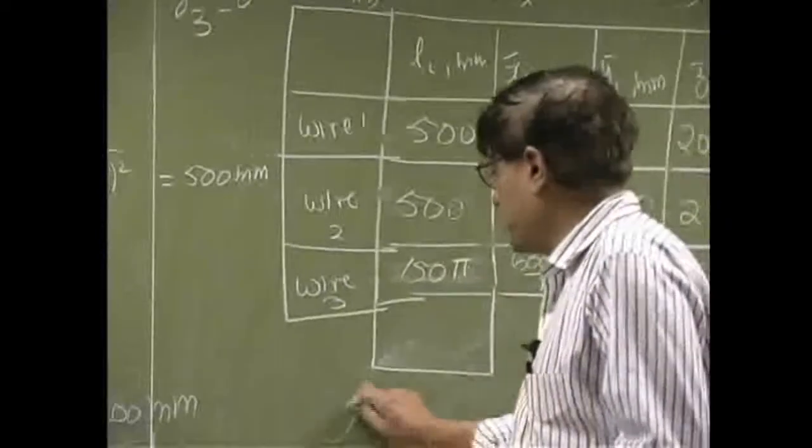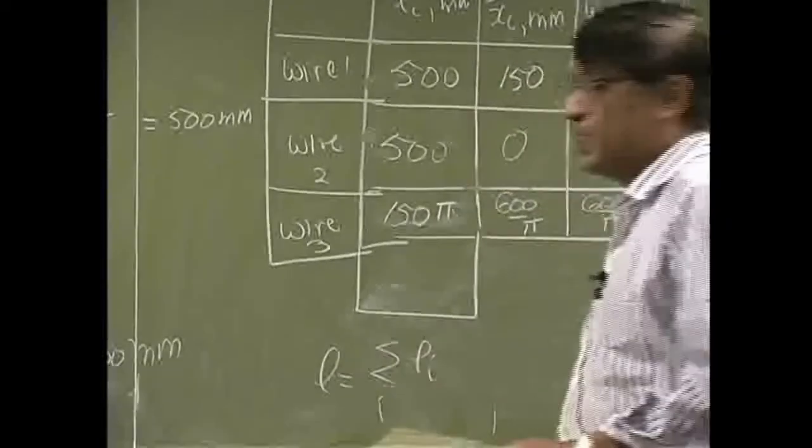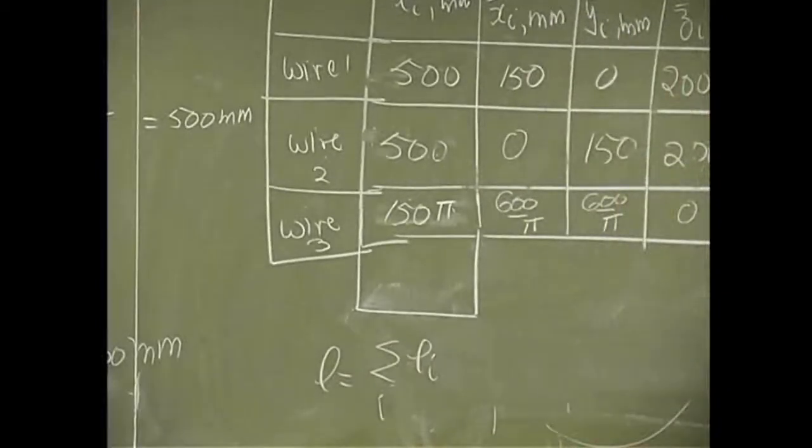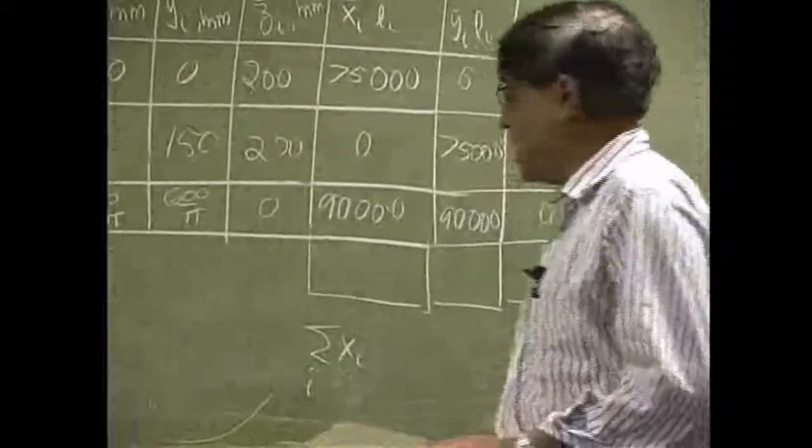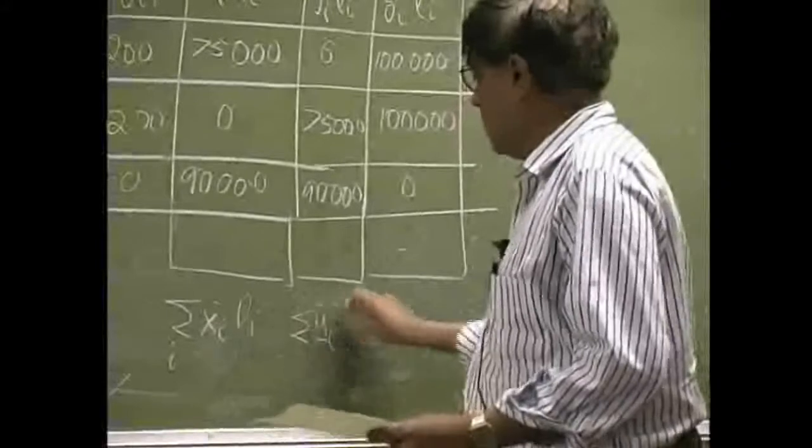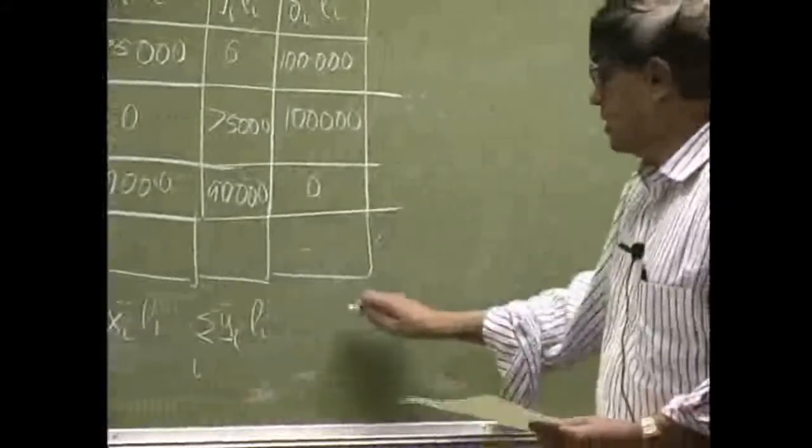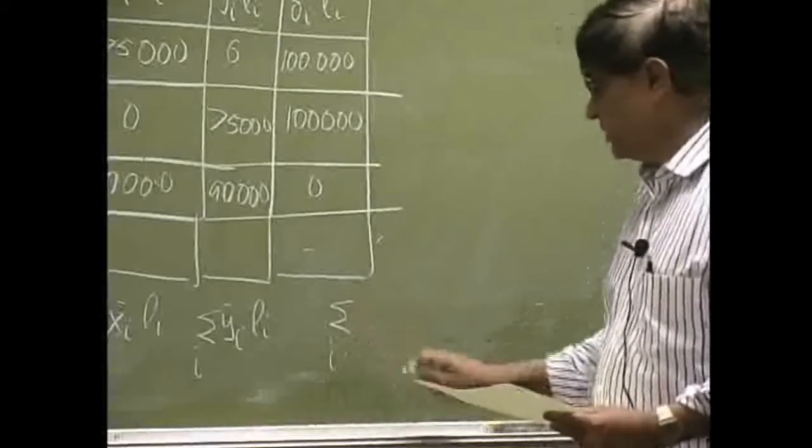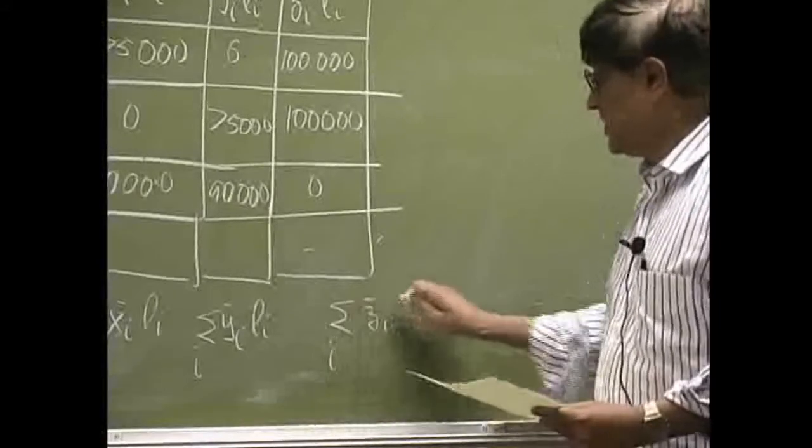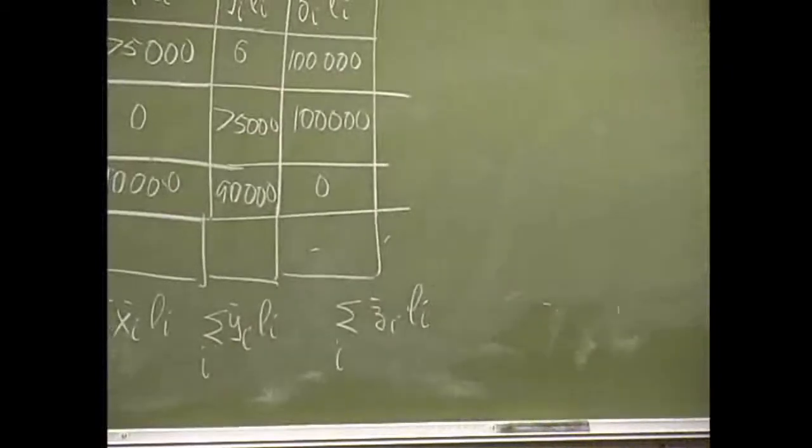Now this column is going to be the total length, that's the summation over Li. This one is summation xi bar Li, this one is y bar Li, and the last one is summation ci bar Li. We're just adding all those things.